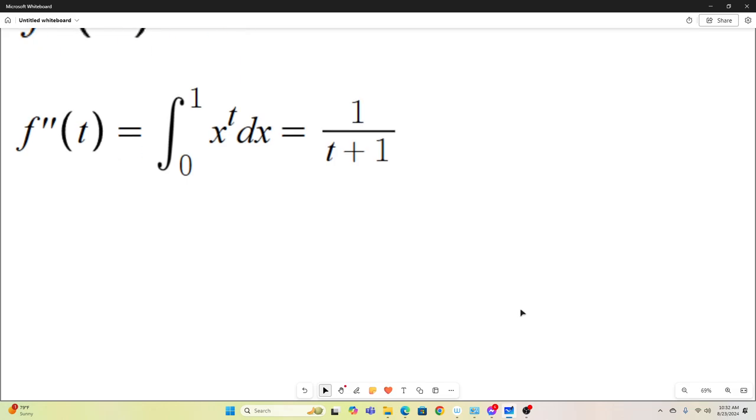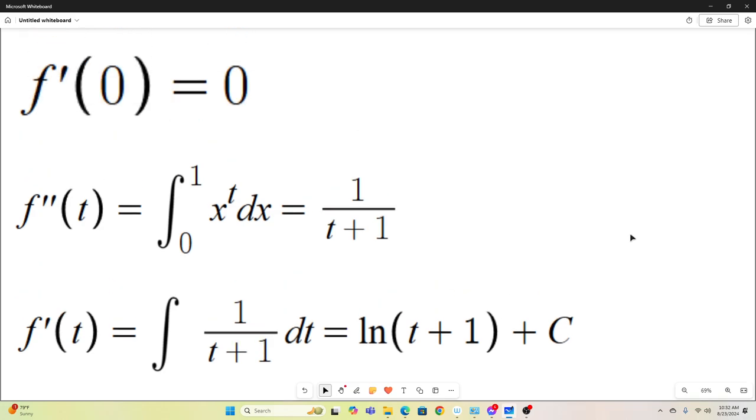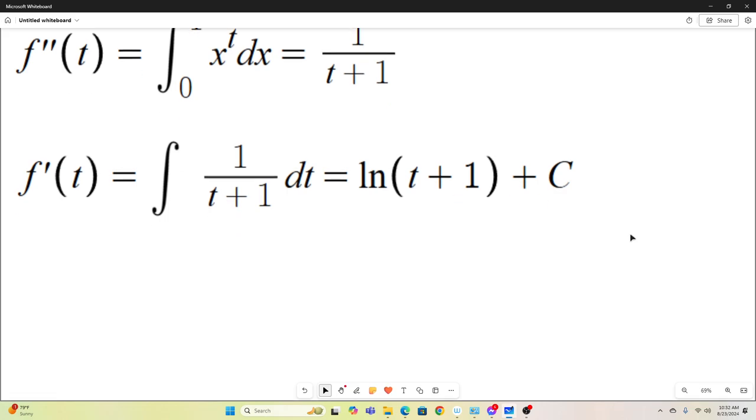Well, now we have to go backwards. We have to integrate to get back to f of t. In fact, we have to integrate twice. So we integrate f double prime of t to get back to f of t. And on this side, we just have the integral of 1 over t plus 1 dt. Well, that evaluates the natural log of t plus 1. But then we have this constant of integration. So we're going to have to use the fact that we know f prime at 0 is equal to 0 to figure this out.